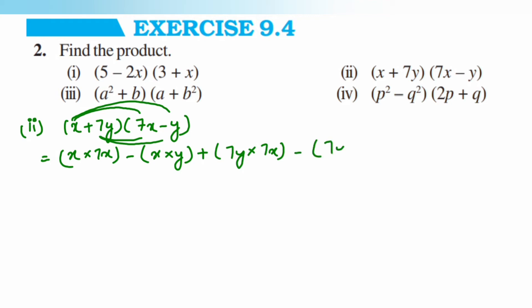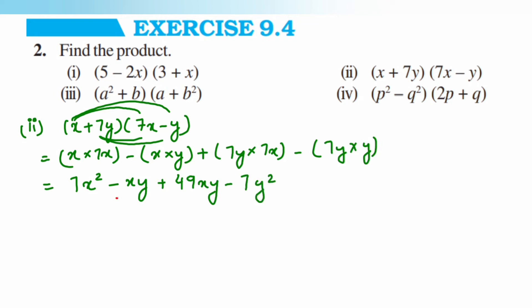This gives: x times 7x is 7x squared, minus xy, plus 7 times 7 is 49, so 49xy, minus 7y squared. Now minus xy and 49xy are like terms: 49 minus 1 gives 48. So the answer for the second question is: 7x squared plus 48xy minus 7y squared.